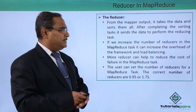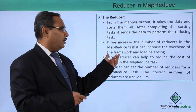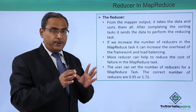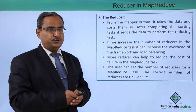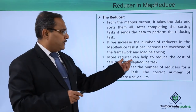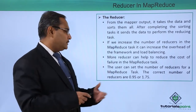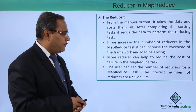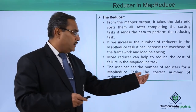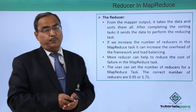If we increase the number of reducers in the MapReduce task, it can increase the overhead of the framework and the load balancing. So depending upon the MapReduce task volume, we are supposed to select the number of reducers accordingly. More reducers can help reduce the cost of failure in the MapReduce task. The user can set the number of reducers, and the correct number of reducers is typically 0.95 or 1.75.